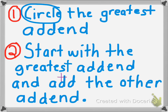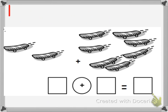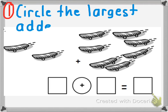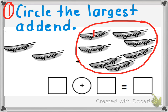Let's look at an example. First, we are going to circle the greatest or largest addend. When we look at this, we see skateboards. I can count 1, 2, 3, 4, 5, 6, 7 — there's a total of 7 skateboards. So I circled the largest addend because there are more skateboards on this side — 7 as opposed to 2.